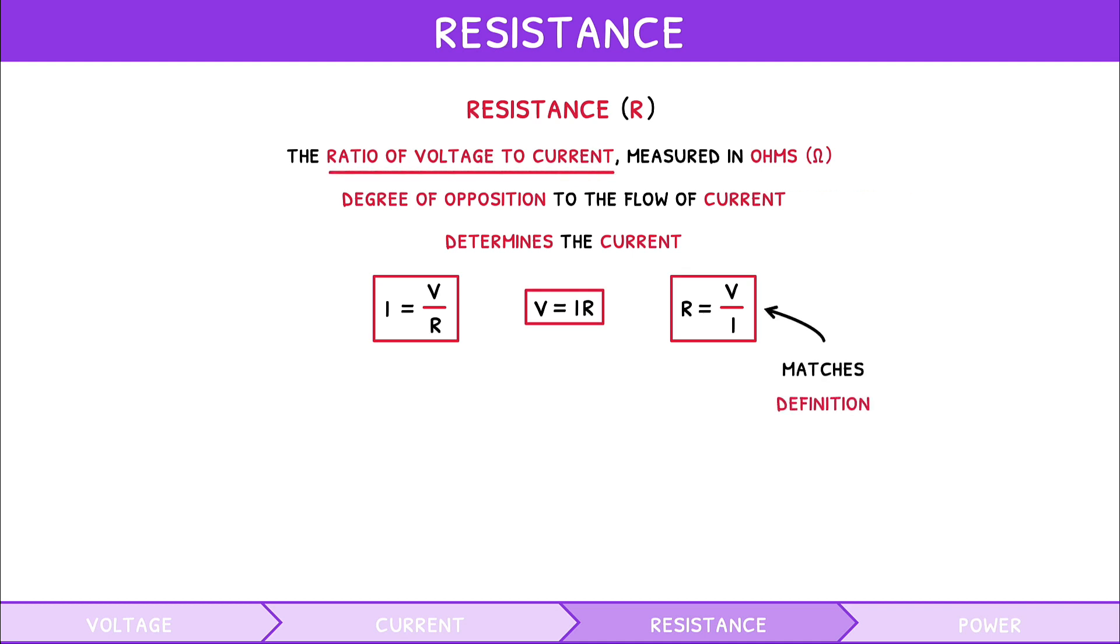Now that you understand how resistance arises, it should be noted that all materials resist current in varying degrees. However, all materials have some resistance, even conducting wires.